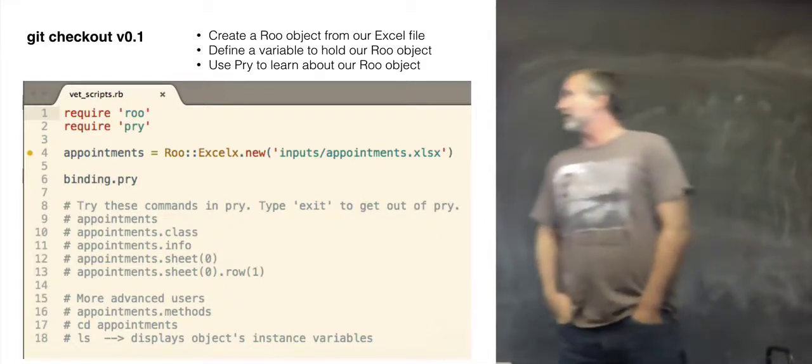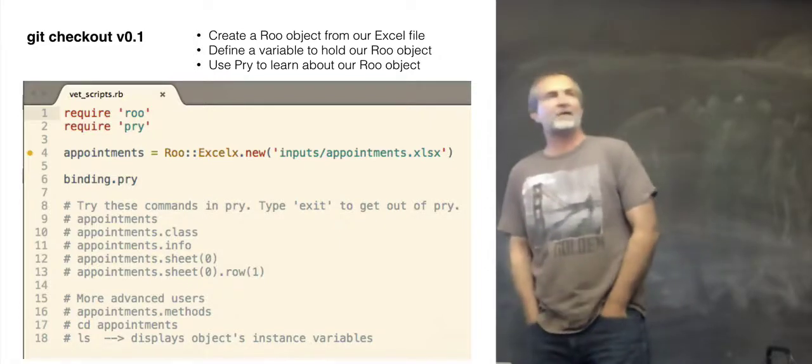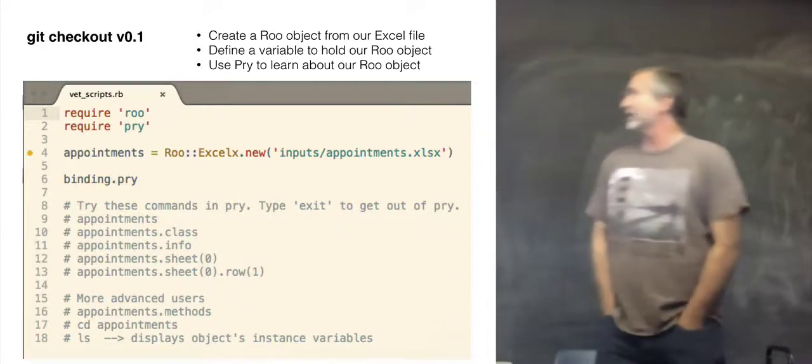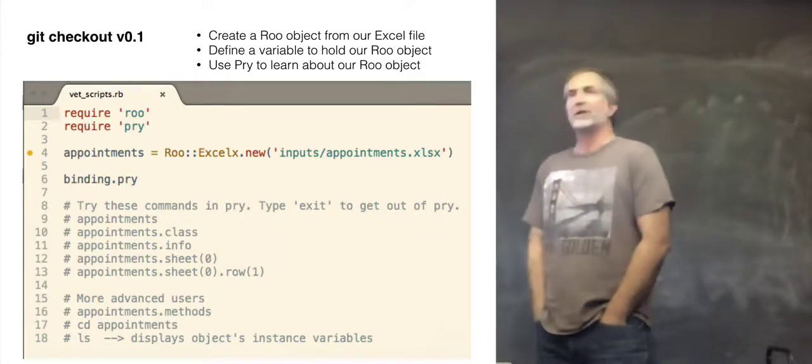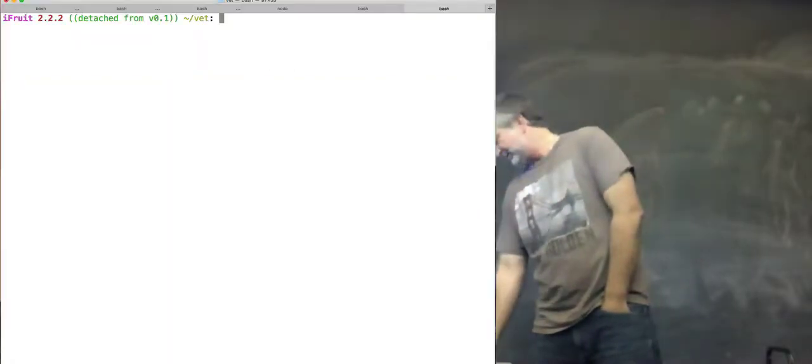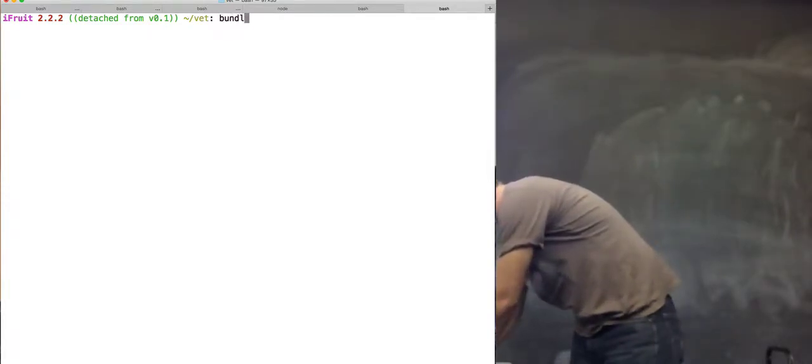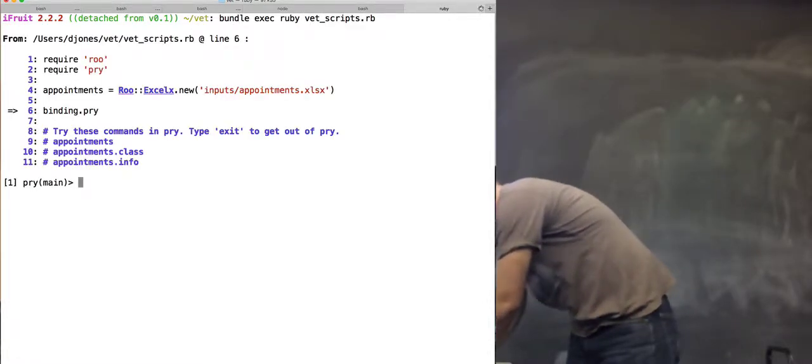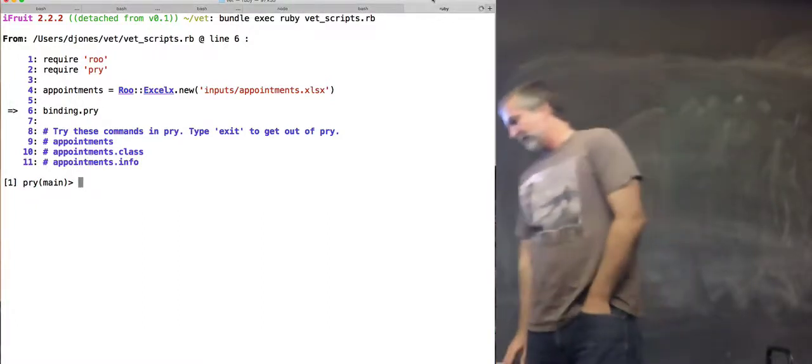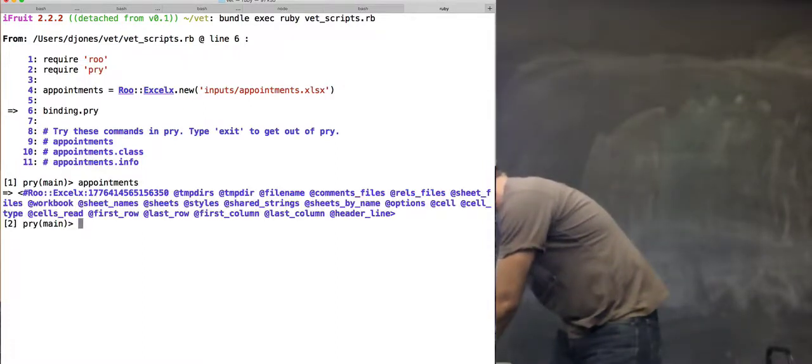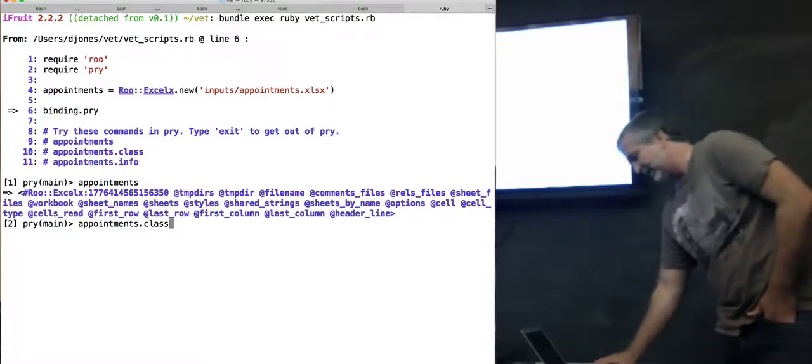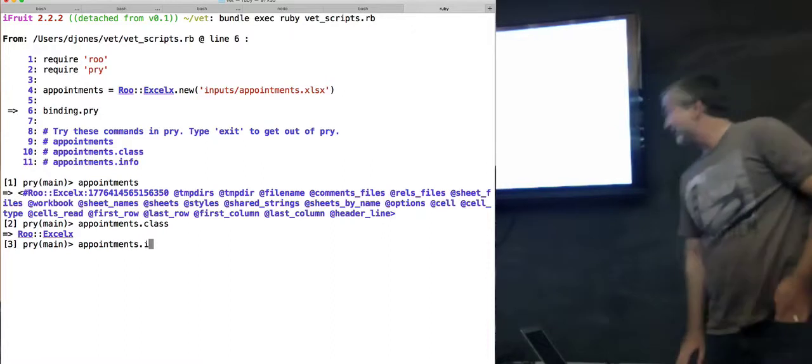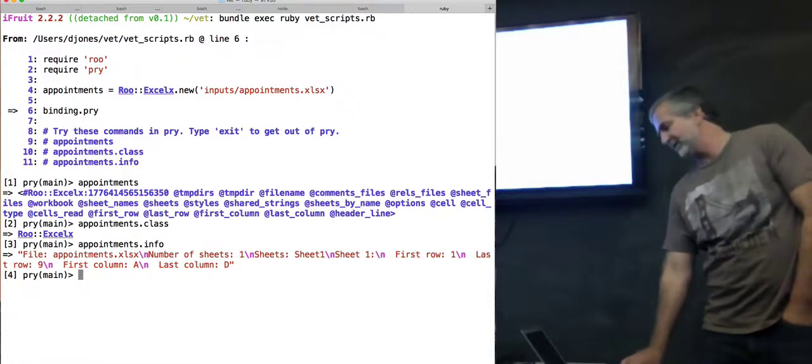So if you were following along and you downloaded this, you can git checkout v0.1. There's seven tags to go through this tutorial. What we're doing here is we're putting in our required gems, that's lines one and two, and then we're creating one variable here and that's reading in the Excel file. And then what we're going to do is jump right into our binding.pry and we're going to just look at our object. So we can see that it's a Roo object. I'm just going to pull appointments.info and it just tells us some very high level information about this object.